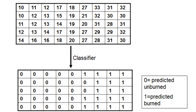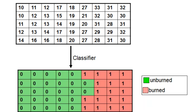In this example with our maximum likelihood classifier, pixel values less than 25 are classified as unburned and given a value of 0. Any pixel value above 25 is classified as burned. As our final step we can color-code all pixels predicted to be unburned as green and all pixels predicted to be burned as some burned color.